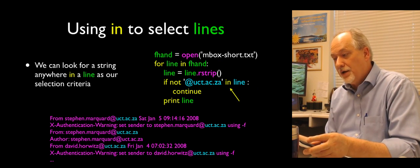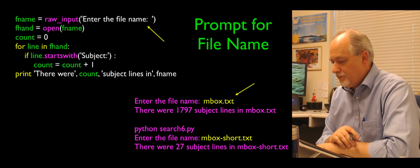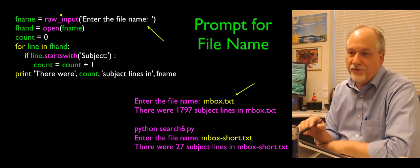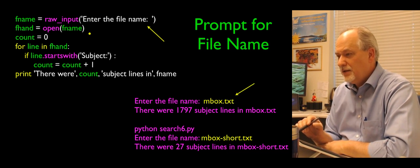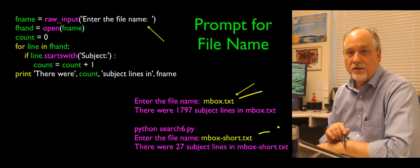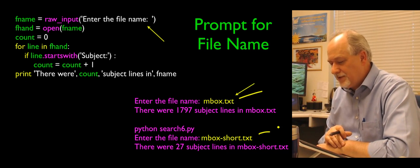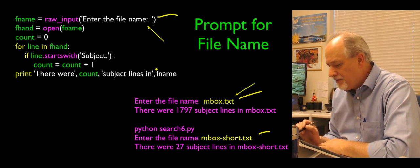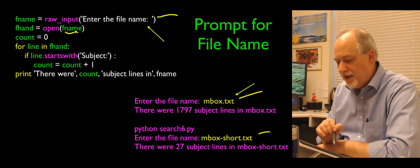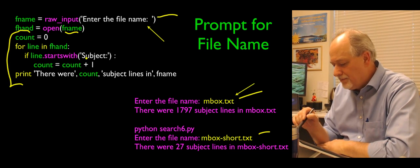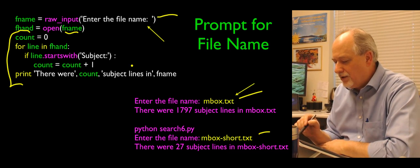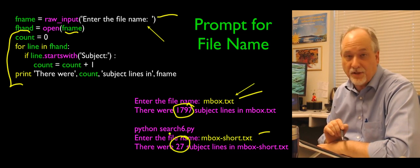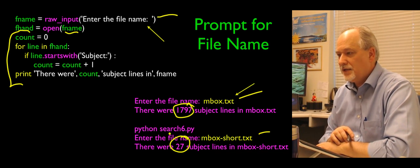You can also prompt for a file name so you don't have to change your code each time. Add `fname = input('Enter the file name:')`, then open whatever was entered. This lets you test with different files like inbox.txt or inbox-short.txt. The rest of the program counts lines starting with 'Subject:' — resulting in 1,797 subject lines in inbox.txt and 27 in inbox-short.txt.